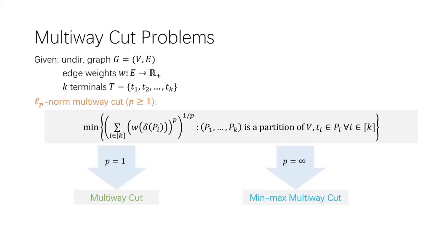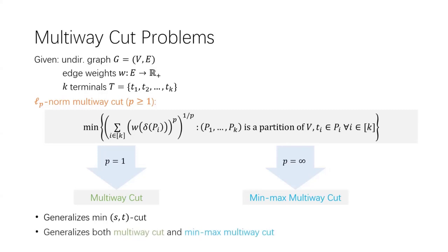Downloads et al. and Switkin et al. were motivated by concrete applications in data placement and parallel processing networks. We studied LP-norm multi-way cut motivated by theoretical generalization. Note that if k equals two, that is we have two terminals, then the problem is simply min s-t cut for any p — this is the easy, polynomial-time solvable case. Moreover, LP-norm multi-way cut is a unified generalization of both multi-way cut and min-max multi-way cut, so it is natural to ask if we can get good approximations for this more general problem.